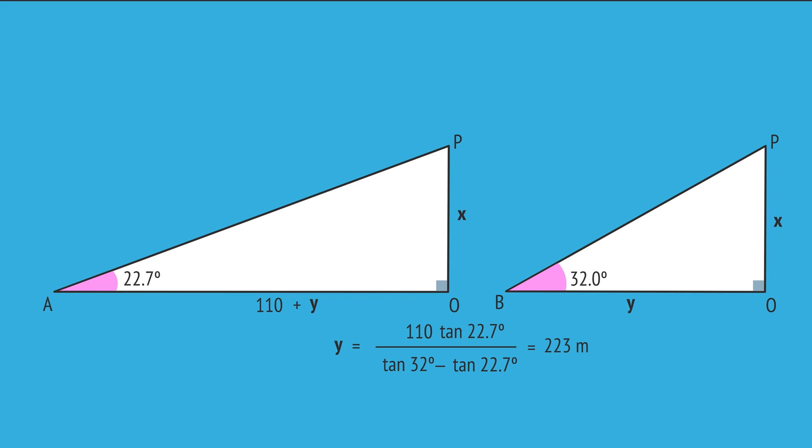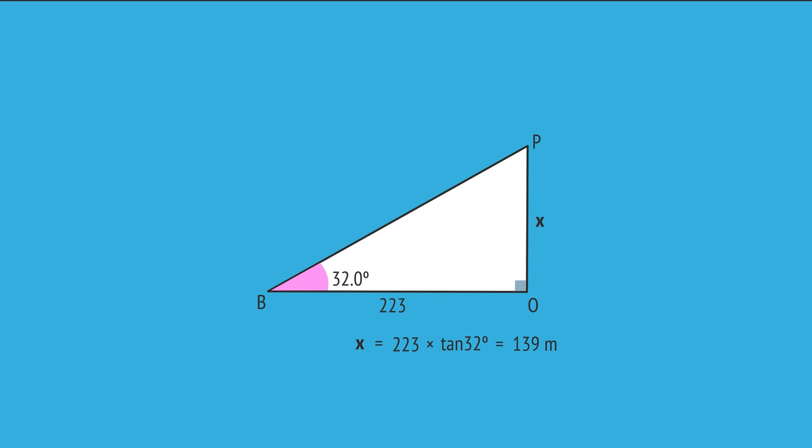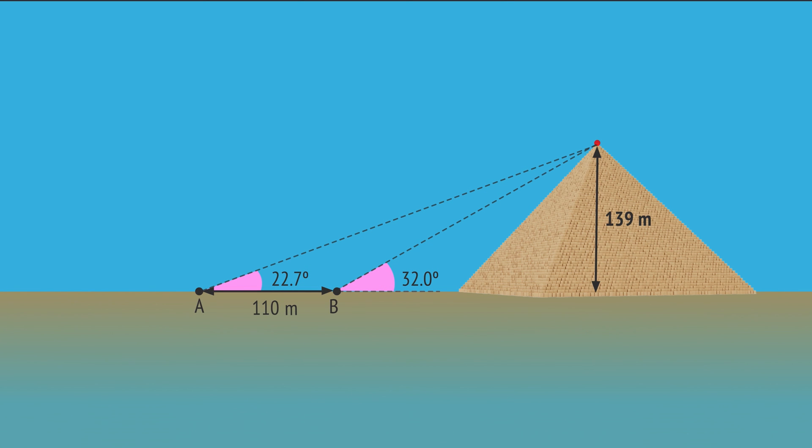Substituting this y-value into our first triangle, we can now use the tangent ratio to calculate x, which gives x equal to 139 meters, and so the height of the Great Pyramid.